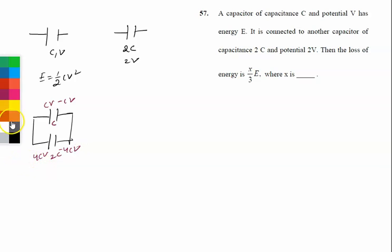We all know when we connect like this, net charge will remain always constant, that is 5CV. So we will calculate common potential. Initial charge equal to final charge. Initial charge on the system is 5CV.